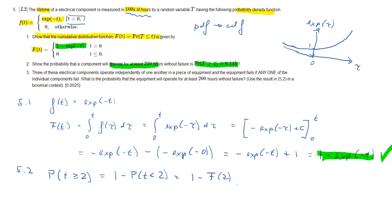So we want the probability that t is larger than 2. It's the same as 1 minus the probability that t is smaller than 2, and that is 1 minus the CDF evaluated at 2.